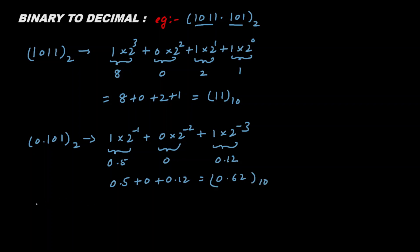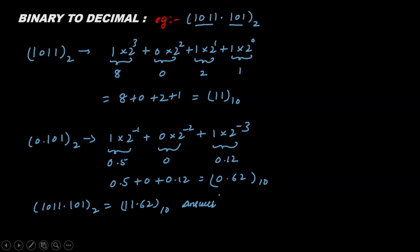Now combining the two parts: 1011.101 to the base two is equivalent to 11.62 to the base ten. So this is our answer for binary to decimal conversion.